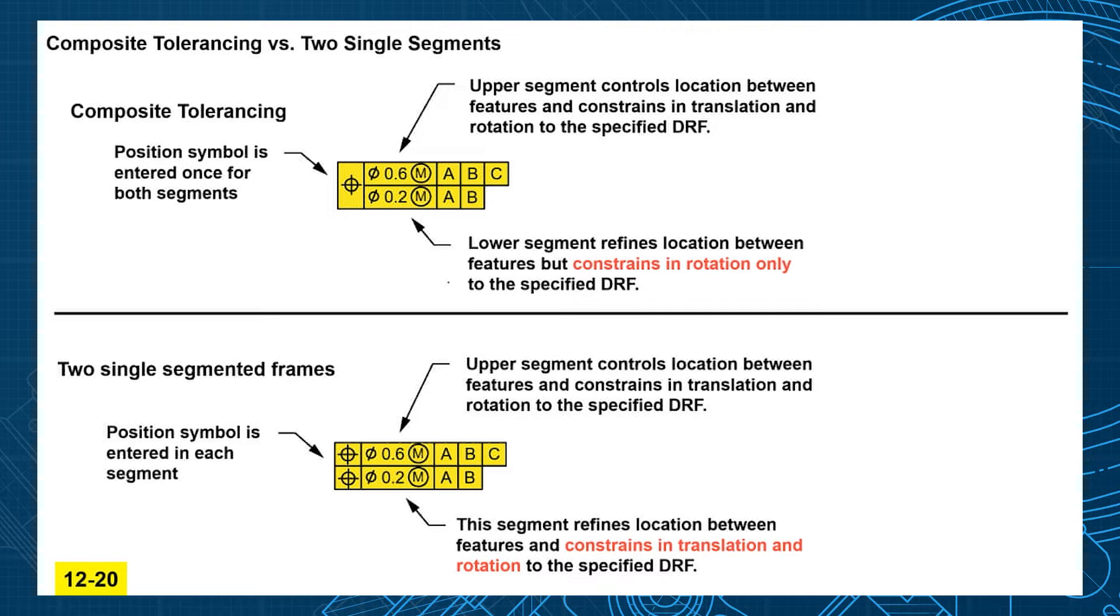Now the lower segment is supposed to be a refinement of the upper. It refines the location between the features. So it controls hole to hole if they're in a pattern but constrains in rotation only to the datum reference frame.